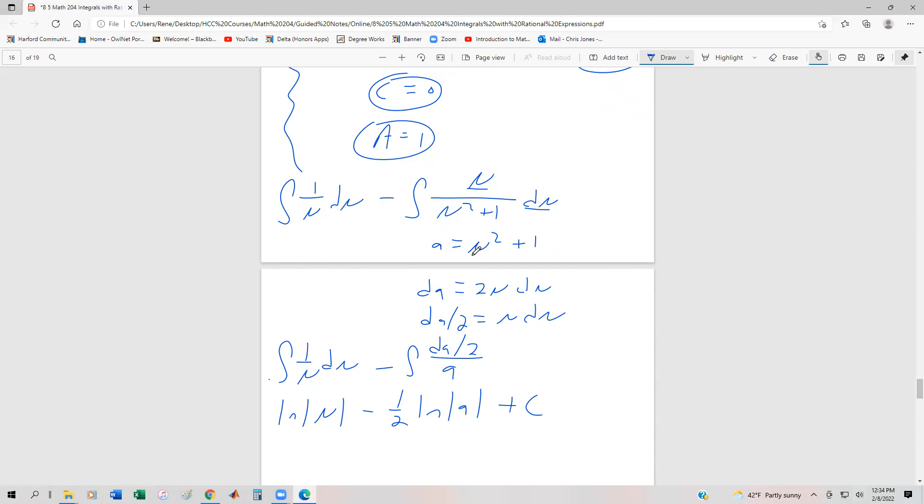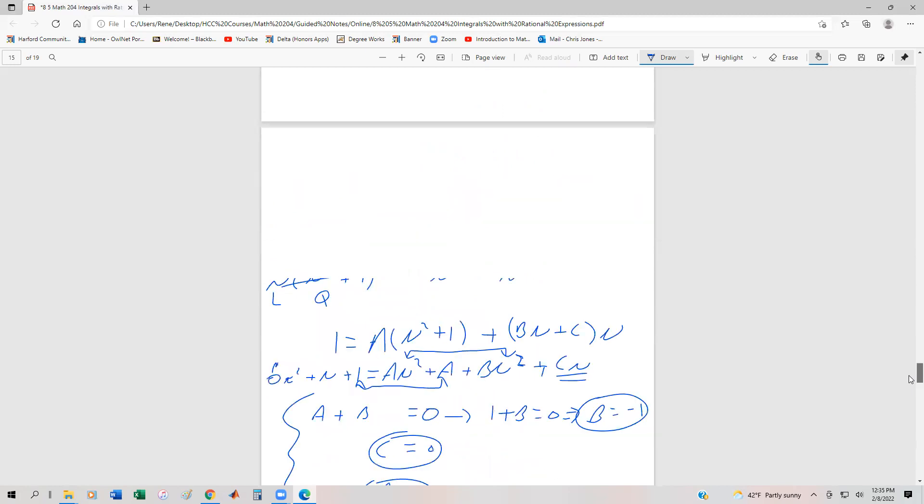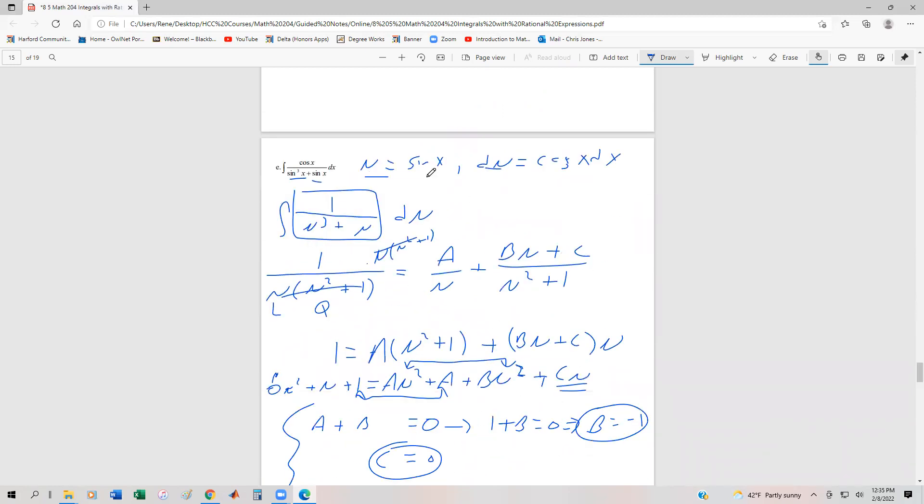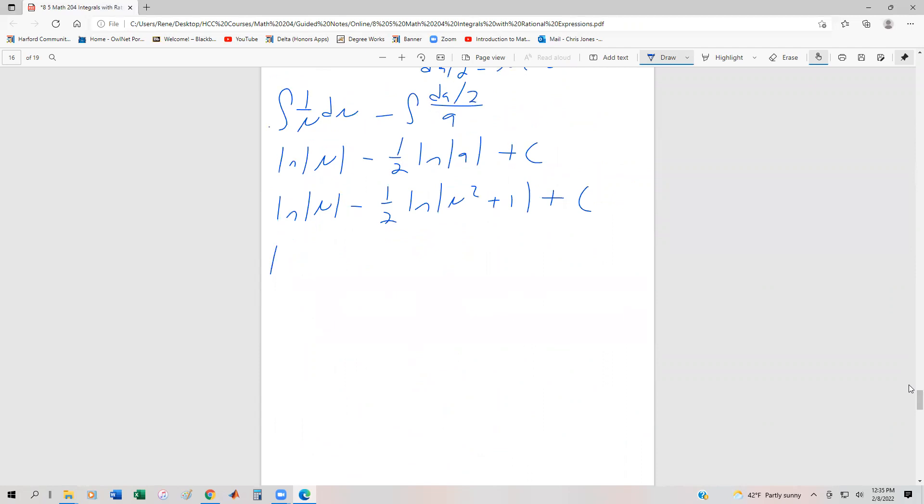Back substituting for A where A is u squared plus one. So we get ln|u| minus one half ln(u² + 1) plus C. Remembering that u at the very beginning of the problem was equal to the sine of x. We're going to get the natural log of |sin x| minus one half ln(sin²x + 1) plus C.